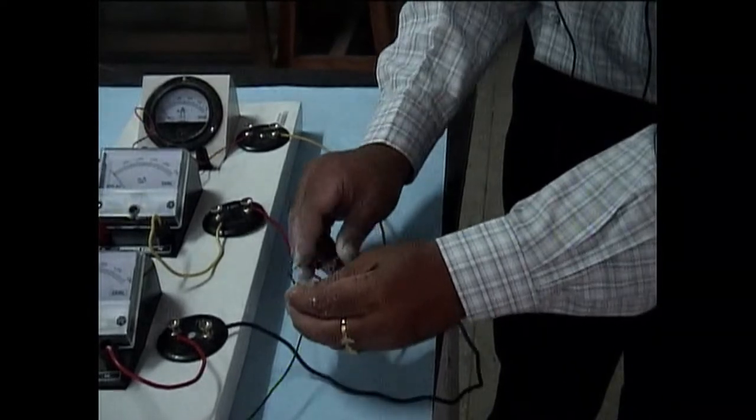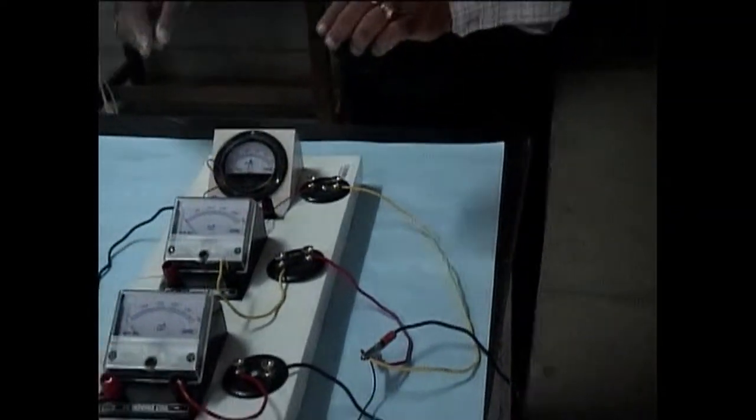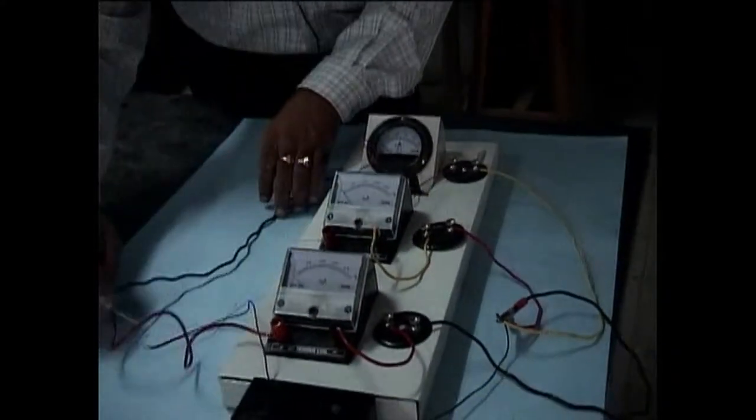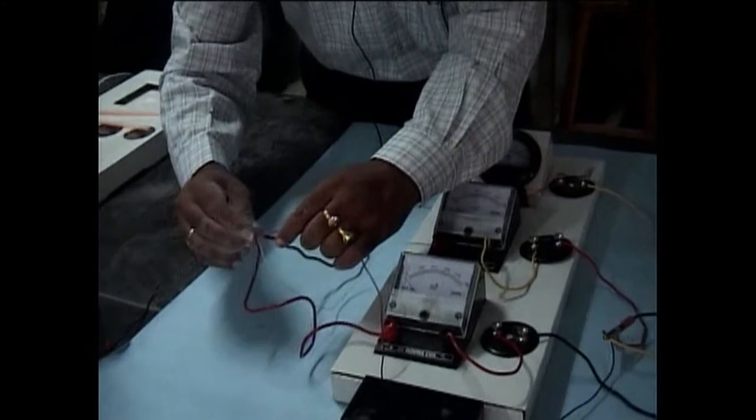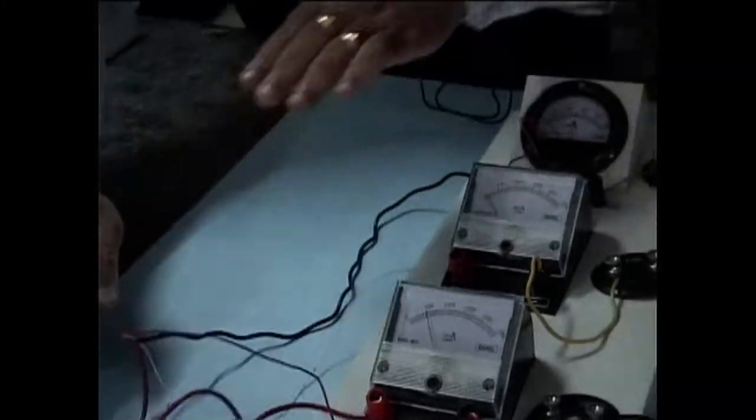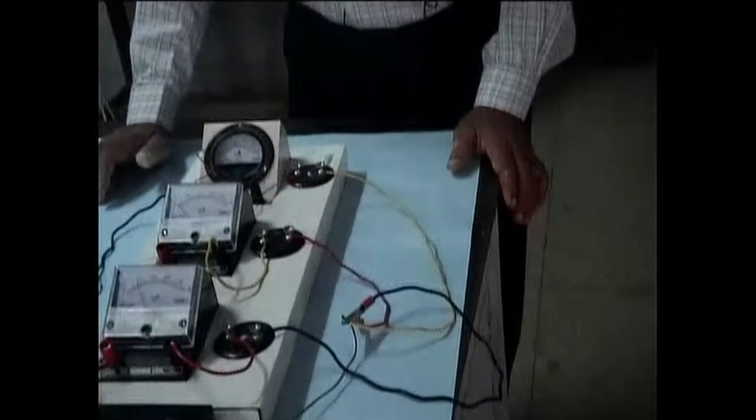In parallel connection the potential is same and in series connection the current is same. Now all the other sides of these terminals are connected to positive of the battery. So now we can say that these three resistors are connected in parallel. Now if I switch on,